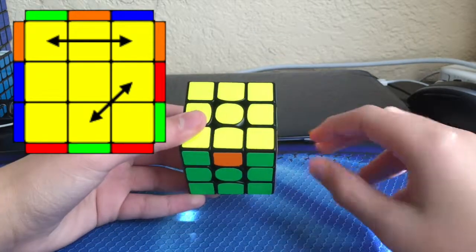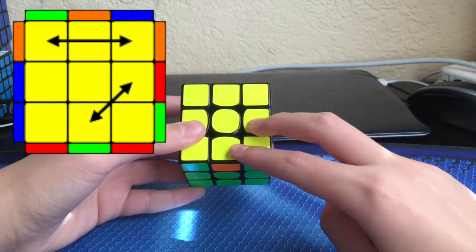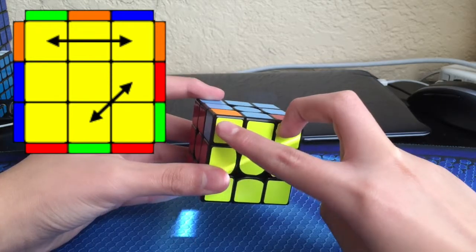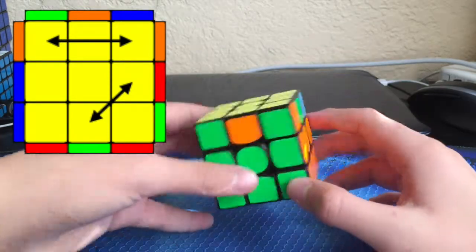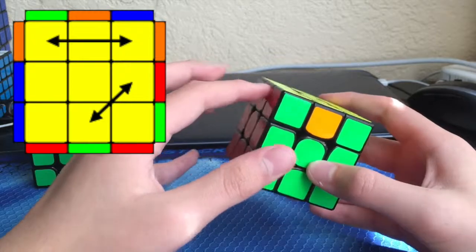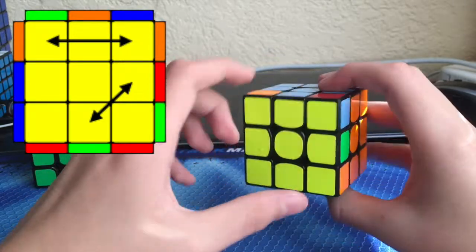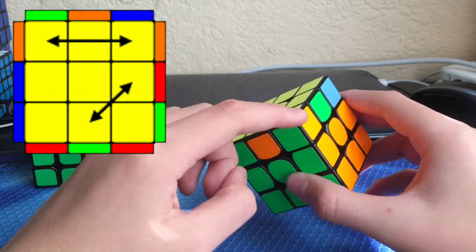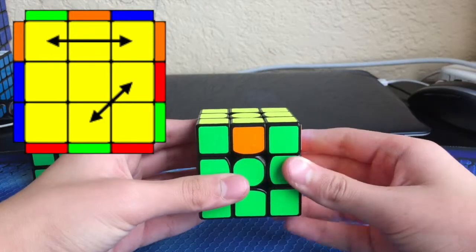In this case, we are going to be swapping adjacent edges and adjacent corners. You want to hold this so you have this solved bar right here, and you've got this solved corner, this solved edge, like that, and you do this algorithm.